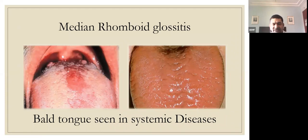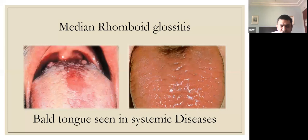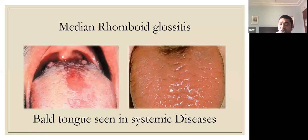Median rhomboid glossitis was previously believed to be a developmental defect caused by incomplete descent of the tuberculum impar during development. It is now associated most commonly with candida infections. The location is the midline on the dorsum of the tongue, just anterior to the circumvallate papillae. Bald tongue is a completely flat, smooth surface devoid of papillae, associated with iron deficiency anemia.